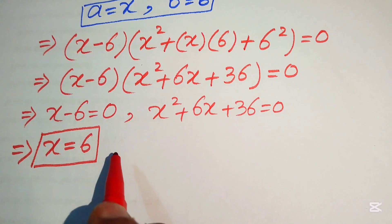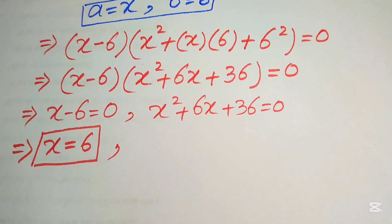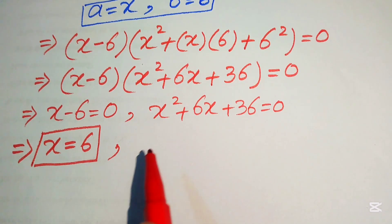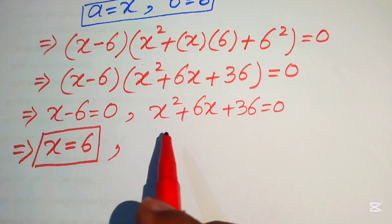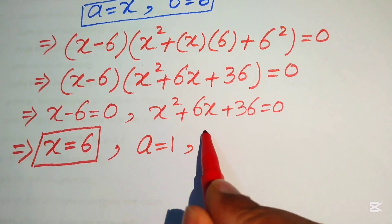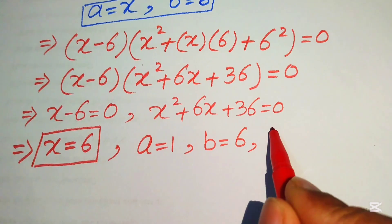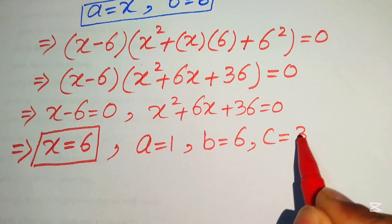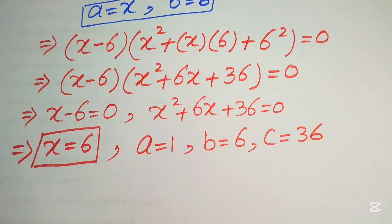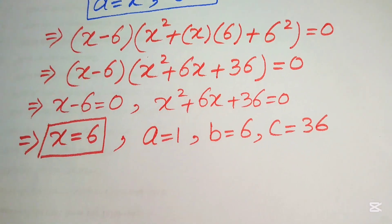For the other roots, we solve the quadratic equation x² plus 6x plus 36 equals 0. The coefficients are a equals 1, b equals 6, and c equals 36.